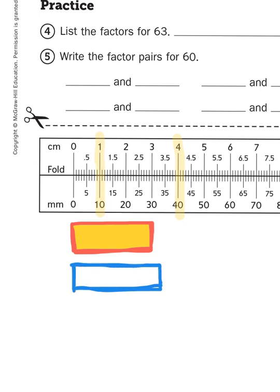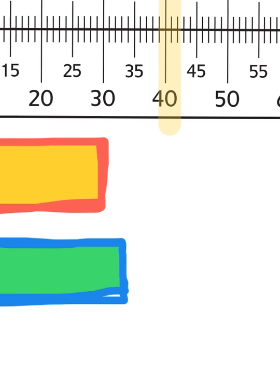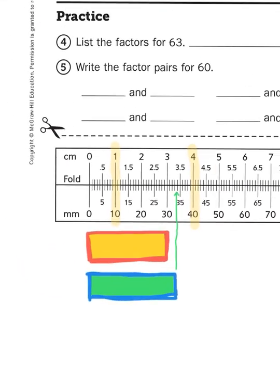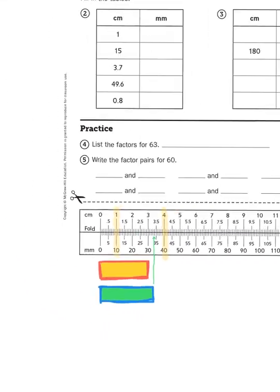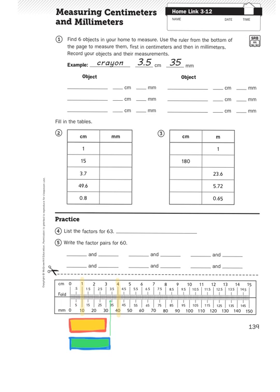If I measure this one, I want to line up my edge of my rectangle to the nearest millimeter. So we'll call that 34, 34 millimeters, give or take. So that's problem number one. You need to measure six objects in your house, objects that are on the small side. I wouldn't try measuring your living room sofa with this little ruler.